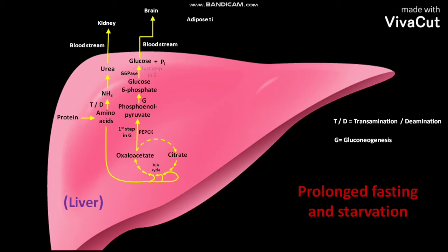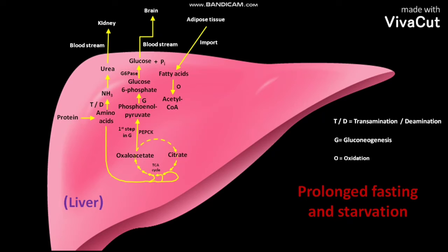The adipose tissue imports its fatty acids to the liver. The fatty acids then undergo oxidation to produce acetyl-coenzyme A. However, as oxaloacetate is degraded by the use of TCA cycle intermediates for gluconeogenesis, its concentration decreases.